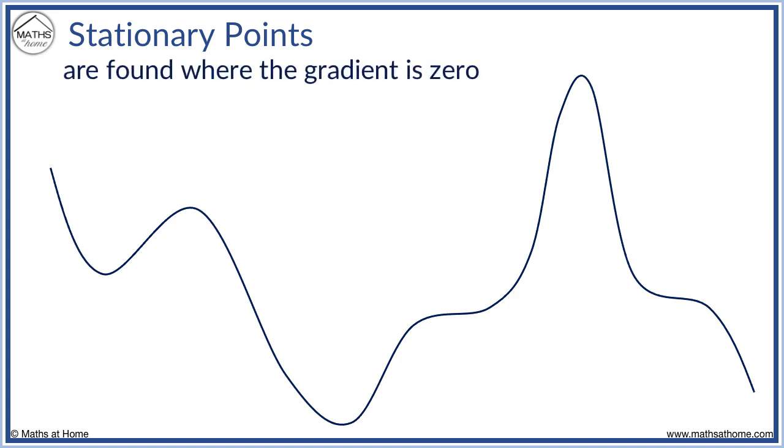We can see that the gradient is zero where the graph is completely horizontal at the following locations. Where the graph looks like this, we have a minimum point. On our graph we have two minimum points, here and here.